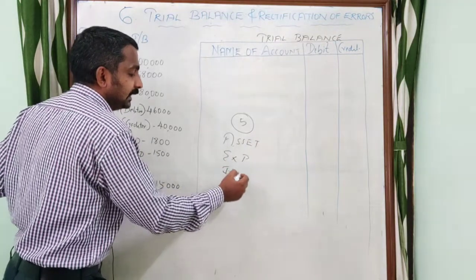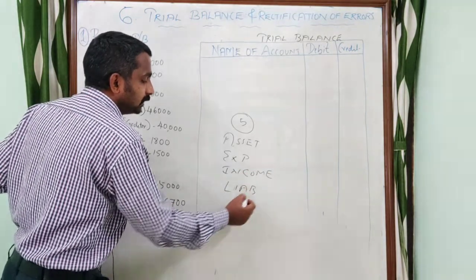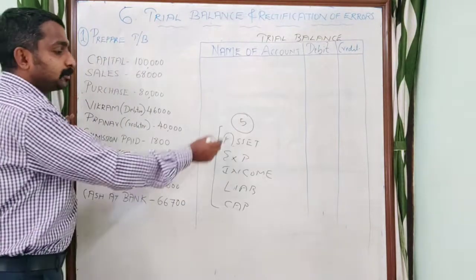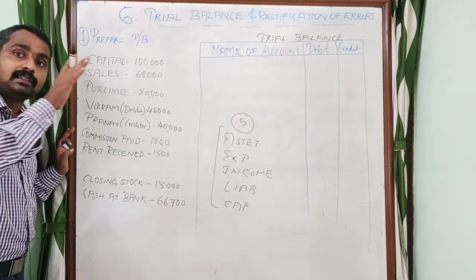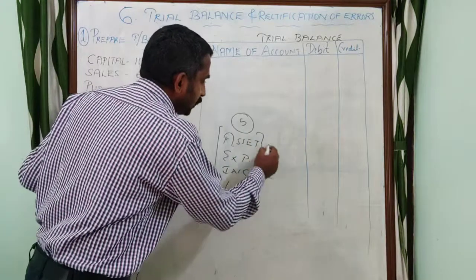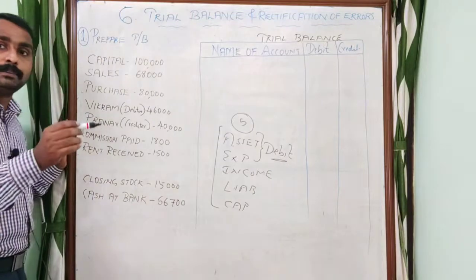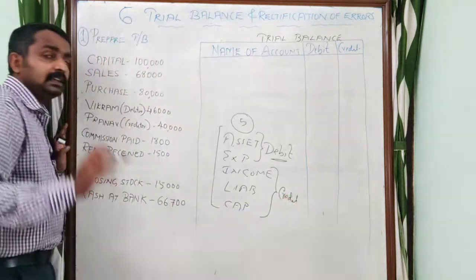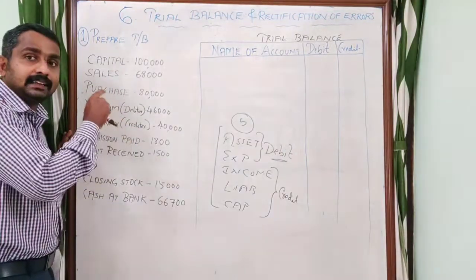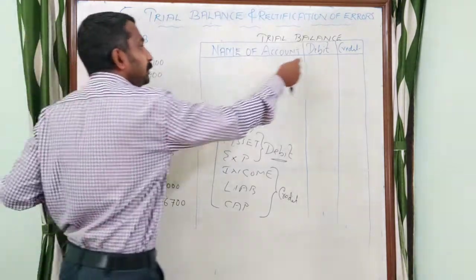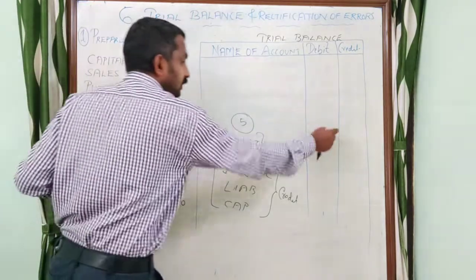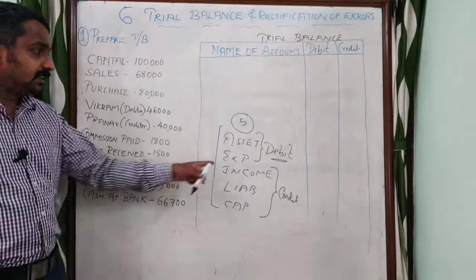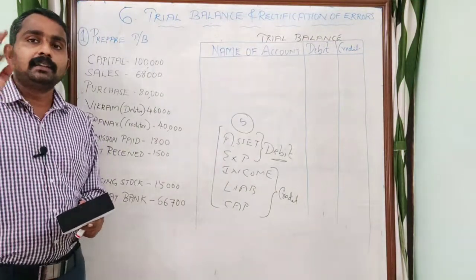As we discussed in the rules of accounting, the main classifications are: asset and expense accounts carry a debit balance, while income, liability, and capital accounts carry a credit balance. So if an account is an asset or expense, its normal balance is debit; if it is income, liability, or capital, its normal balance is credit.